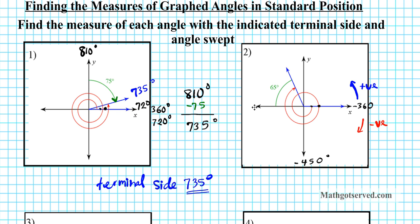Another quarter of a circle brings us here, so we subtract another 90 degrees, giving negative 540 degrees. The green arrow is in the direction of our rotation, and it tells us that if we stop at negative 540, in order to get to the terminal side, we need to add 65 — but notice this is 65 more in the clockwise direction than where we stopped.